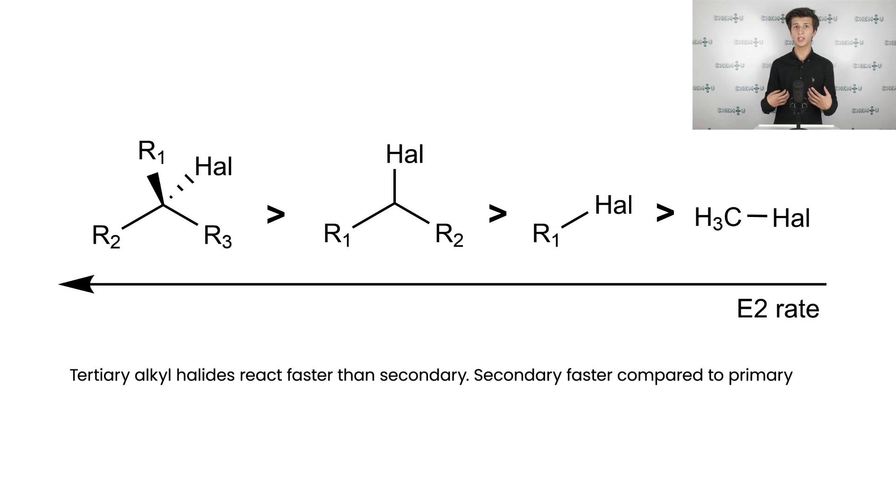It might be confusing since we are used to steric hindrance having a negative influence on kinetics. The bulky substituents usually decrease the rate of the reaction, as they significantly decrease the accessibility of the reaction center. In other words, they are making the interaction between reactants less probable. However, tertiary halides react faster than secondary, and secondary faster compared to primary. There are two main reasons for that.